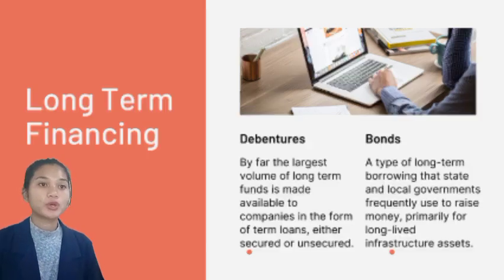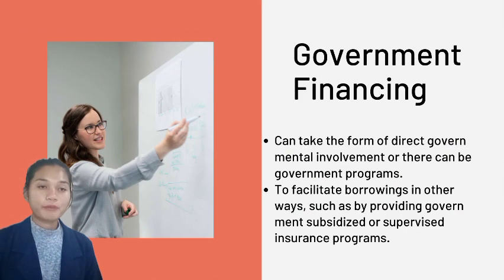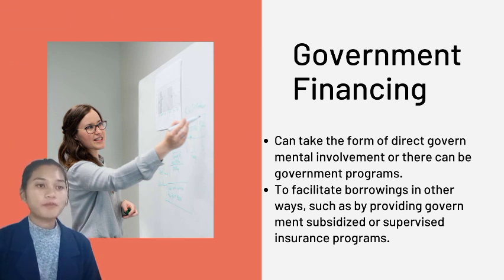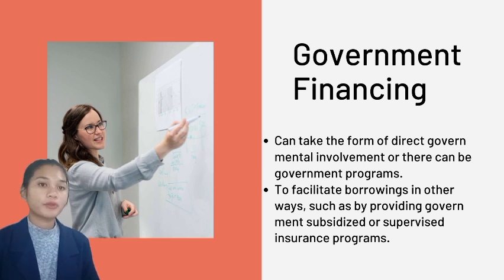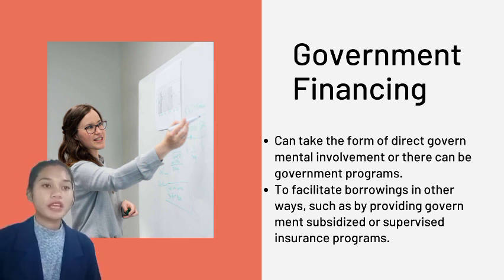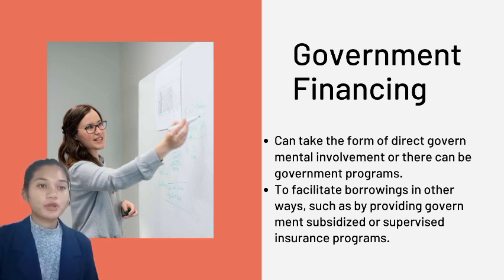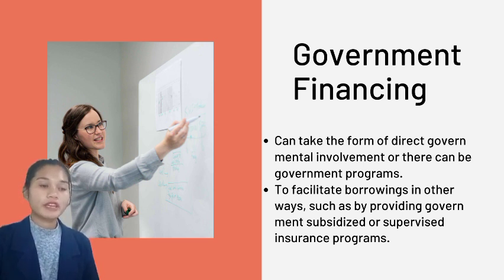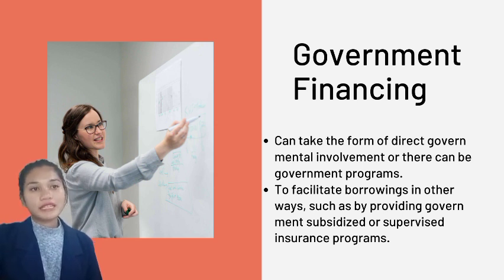Now let's move on to government financing. Government involvement may be direct or it may take the shape of a program. The government can make borrowing easier in other ways, as well as by offering insurance policies that are subsidized or controlled by the government. That's all for government financing.